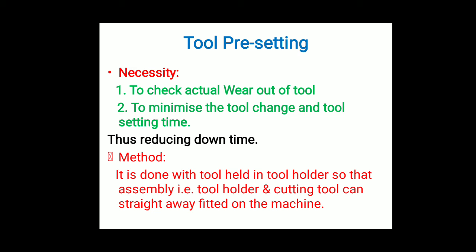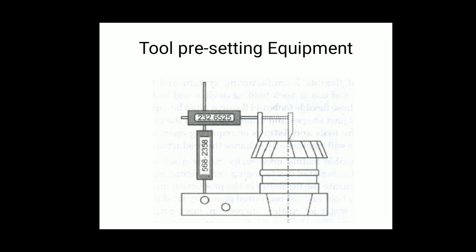Tool pre-setting is done with the tool held in a tool holder so that the assembly — the tool holding device and cutting tool — can be fitted straight onto the machine. The tool holder is set away from the machine and workpiece, which is a simple method that gives the benefit of reducing downtime and increasing productivity.